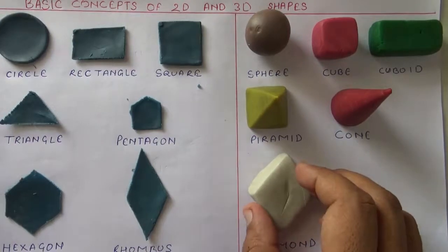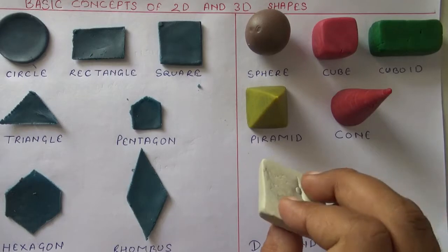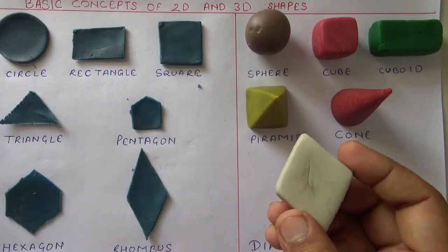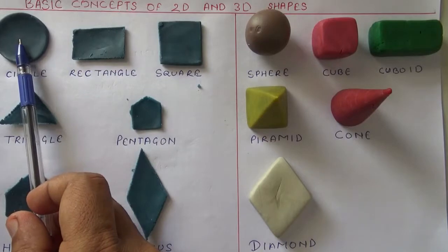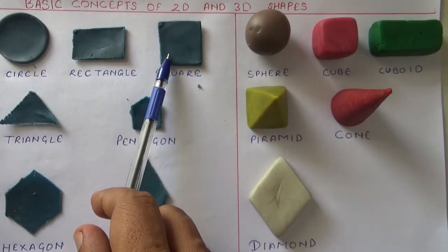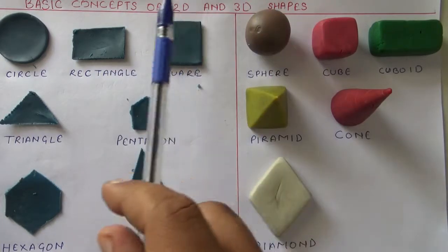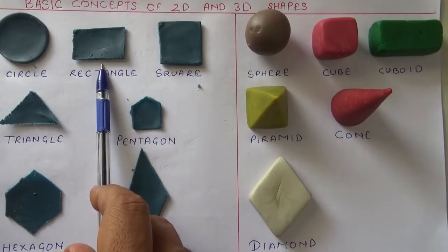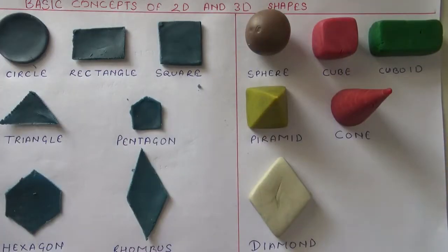Diamond — a three-dimensional shape. To summarize: a circle is a two-dimensional shape and its three-dimensional equivalent is a sphere. A square is two-dimensional and its three-dimensional shape is a cube. A rectangle is two-dimensional and its three-dimensional shape is a cuboid. The rest of the shapes will be shown next time.